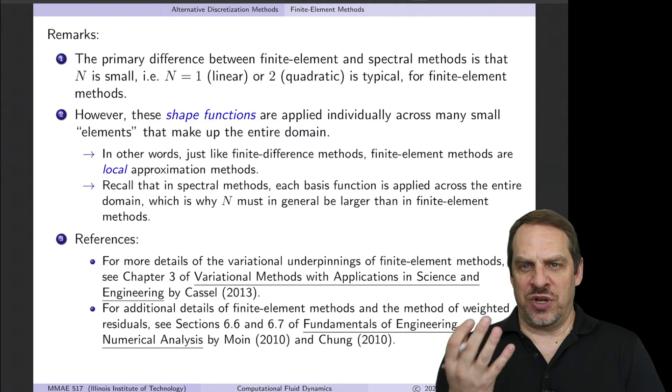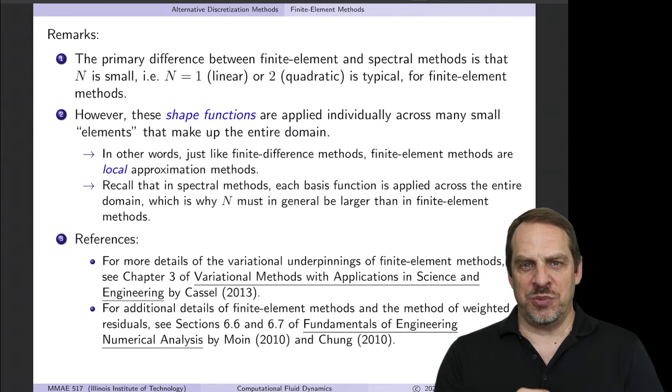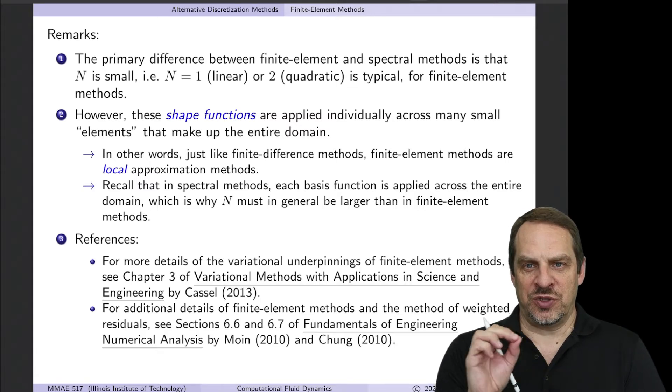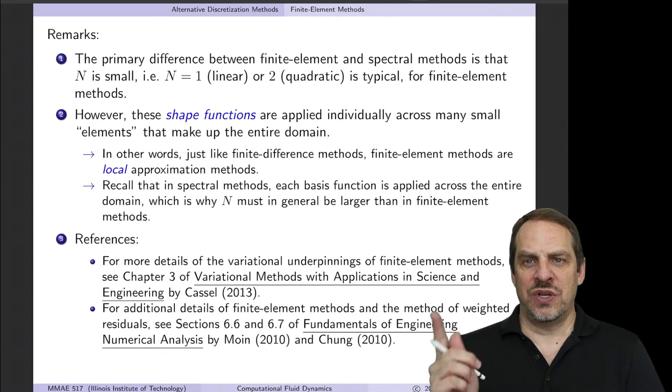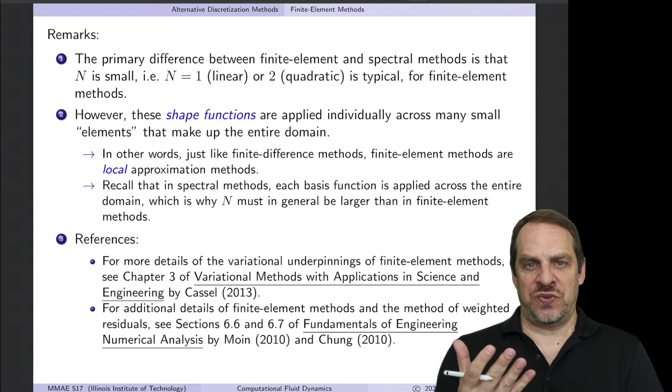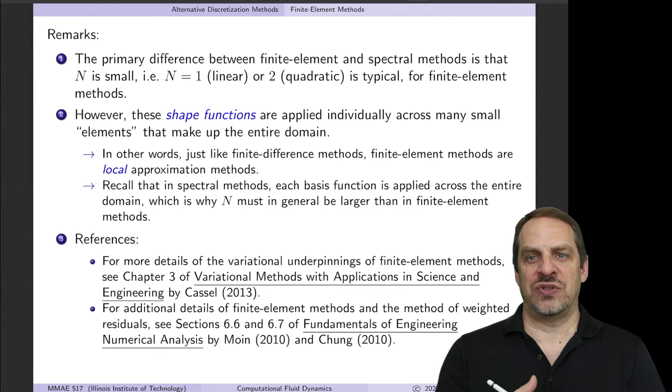Again, I don't want to go into a lot of detail. I just want to contrast this finite element method with the finite difference and spectral methods that we've been discussing. So the difference with finite element methods as compared to spectral methods—remember spectral methods, we had a global basis function that spanned the entire domain, and then we would choose how many of those basis functions we want to include in our approximation. So that was capital N.